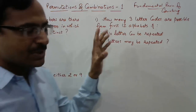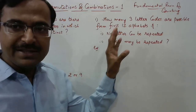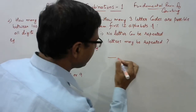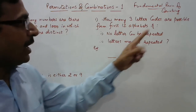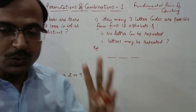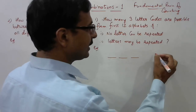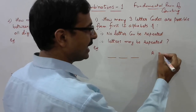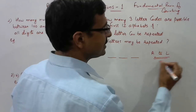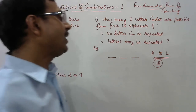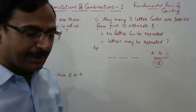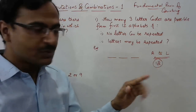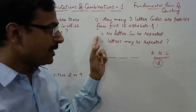In this question we are asked: how many three-letter codes are possible from the first 12 alphabets? So overall there are 12 alphabets — A to L — and we have to use one alphabet in each place to form a three-letter code.